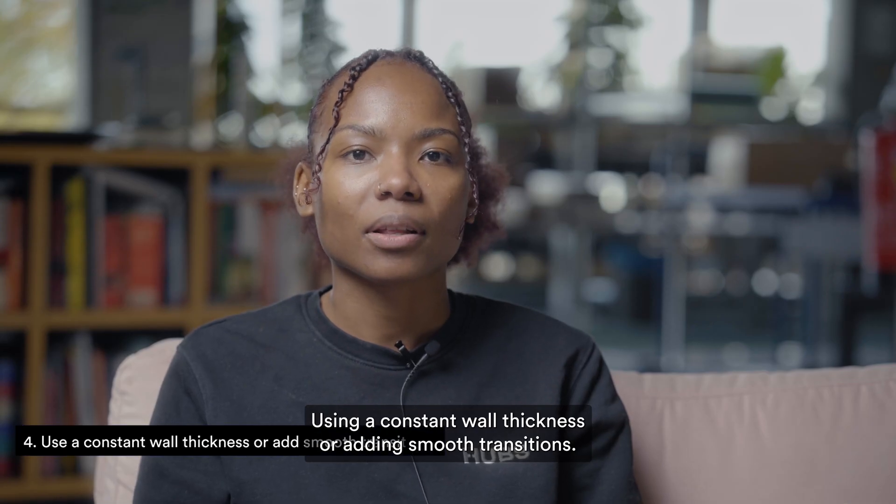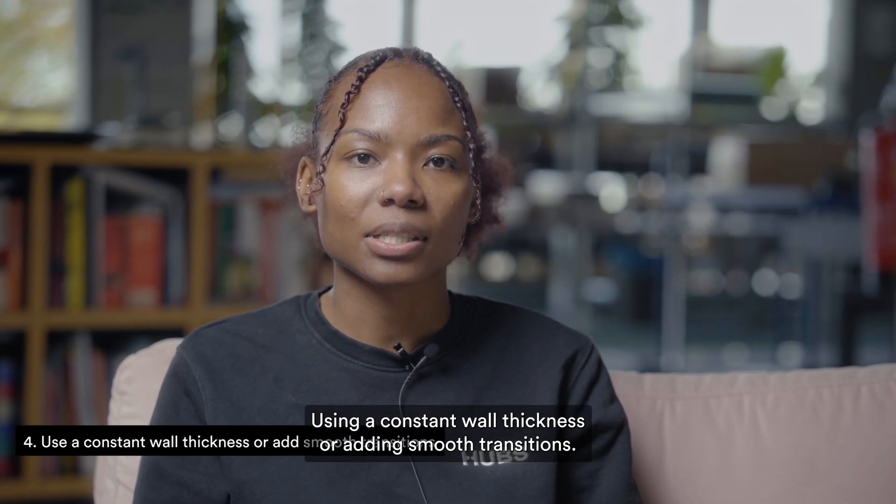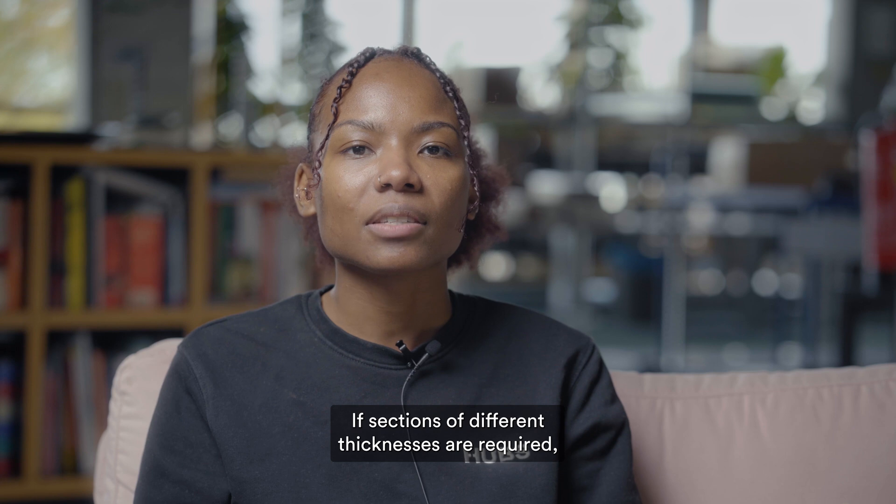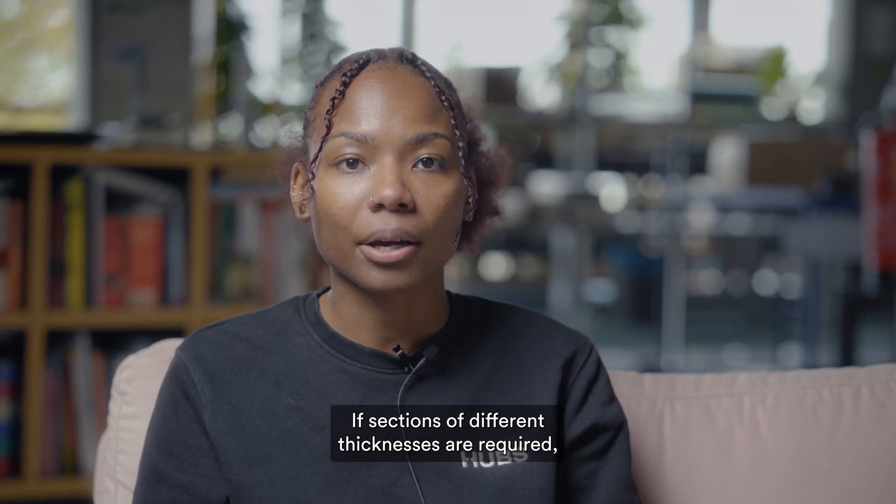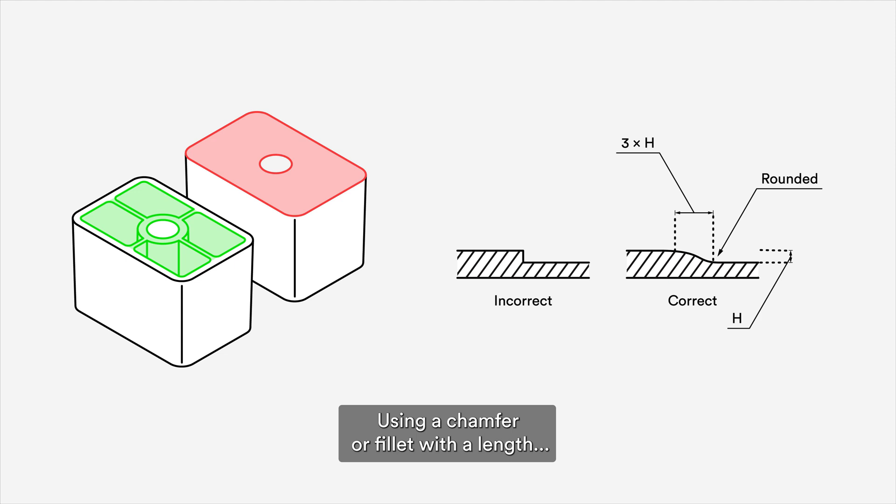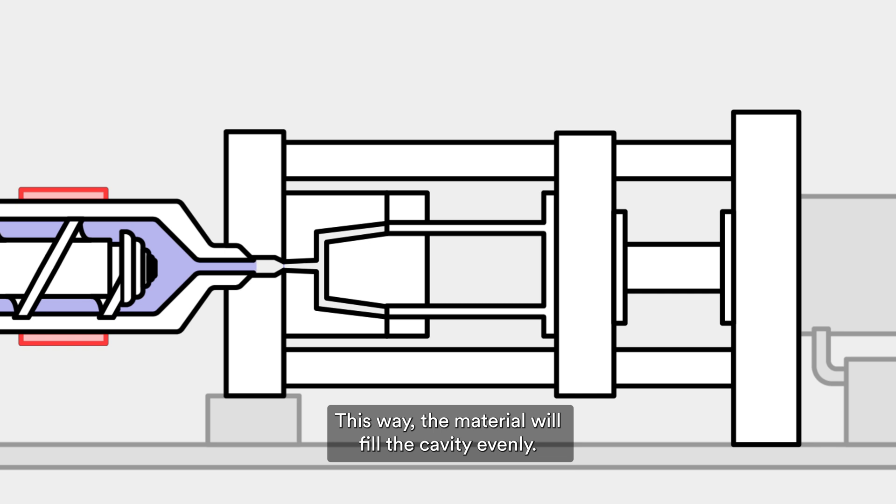Using a constant wall thickness or adding smooth transitions. Parts with non-uniform walls may warp as the material cools down after molding. If sections of different thicknesses are required, make the transition as smooth as possible using a chamfer or fillet with a length that is three times the difference in thickness. This way, the material will fill the cavity evenly.